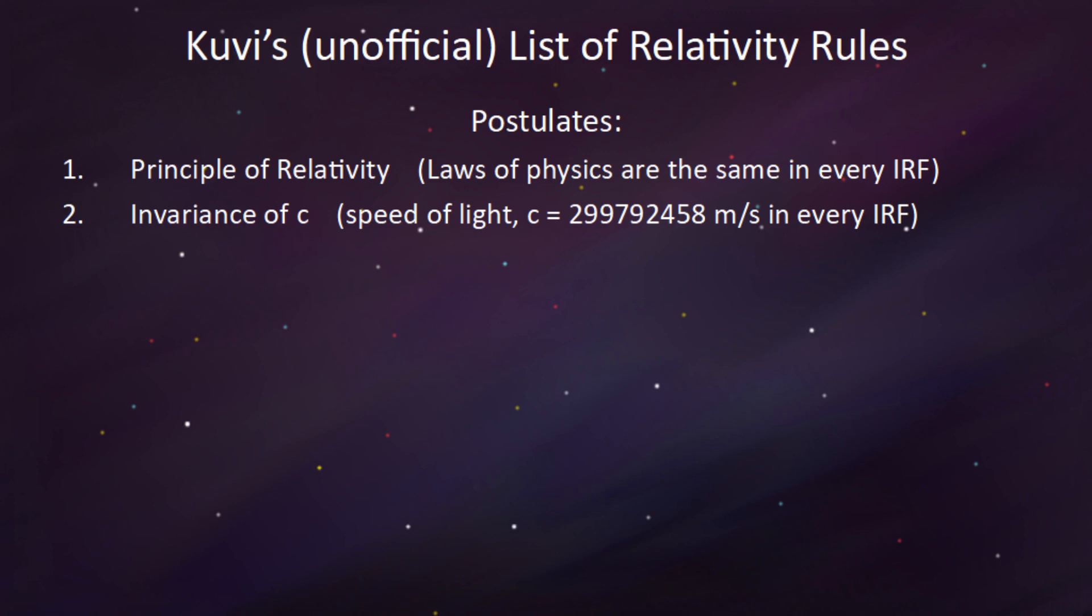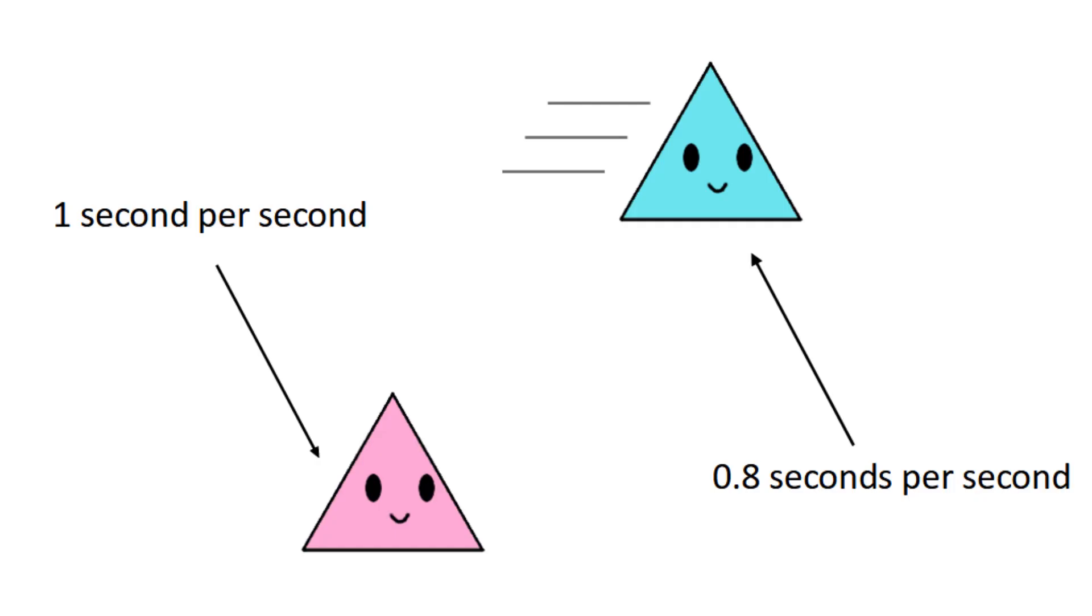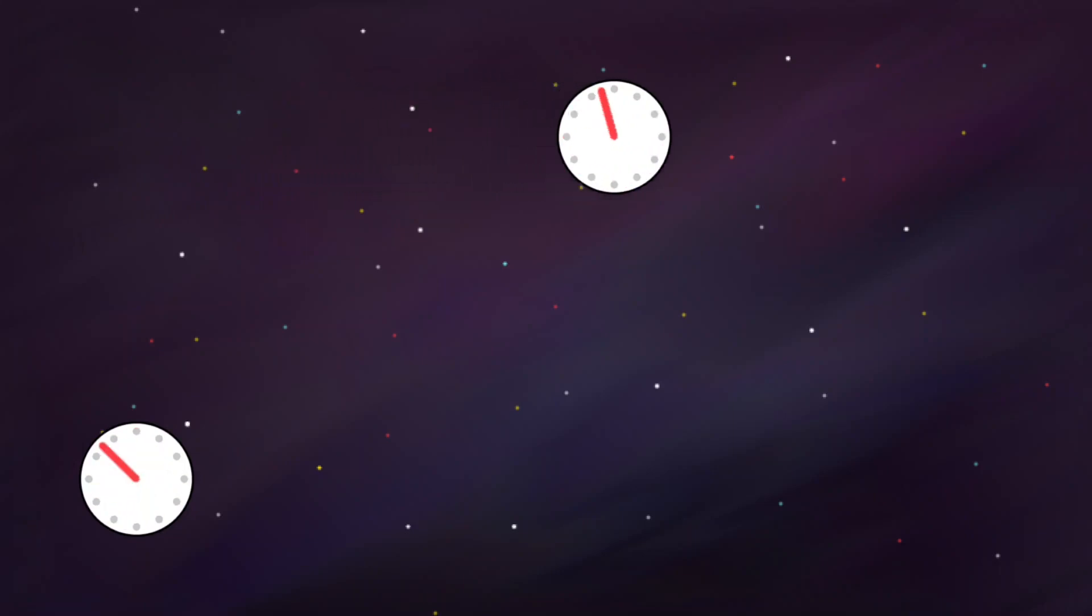Time dilation is a phenomenon in which time passes at different rates, depending on your reference frame. Specifically, when you travel faster, time passes slower.